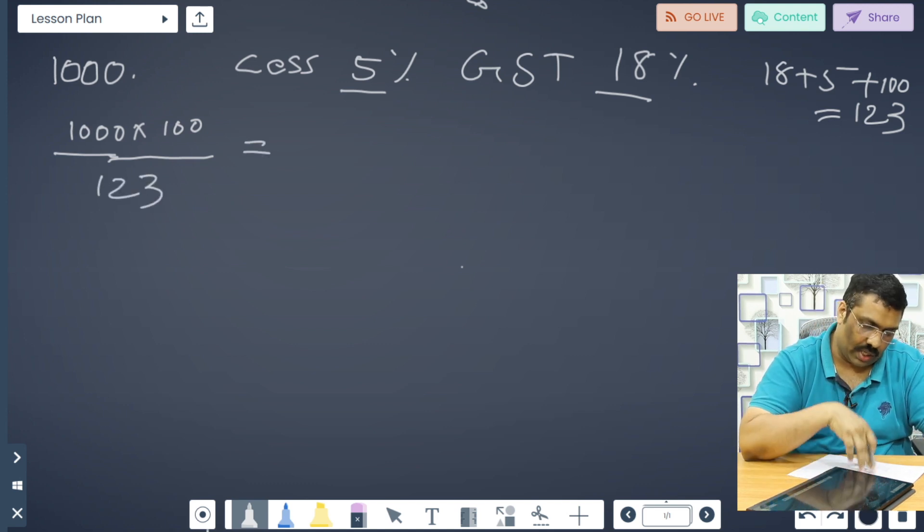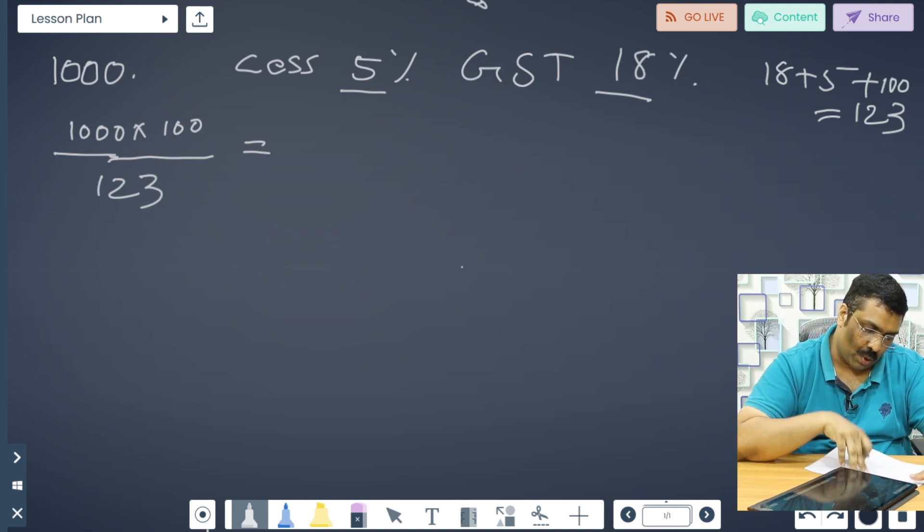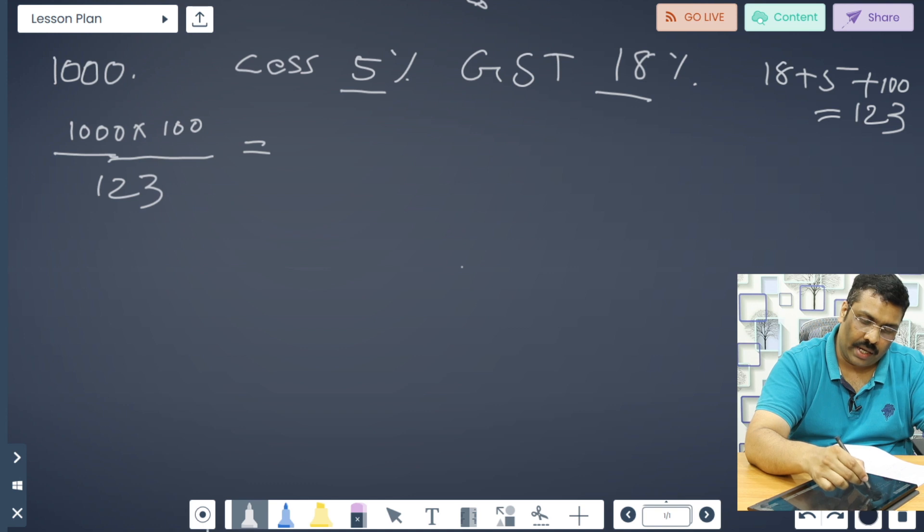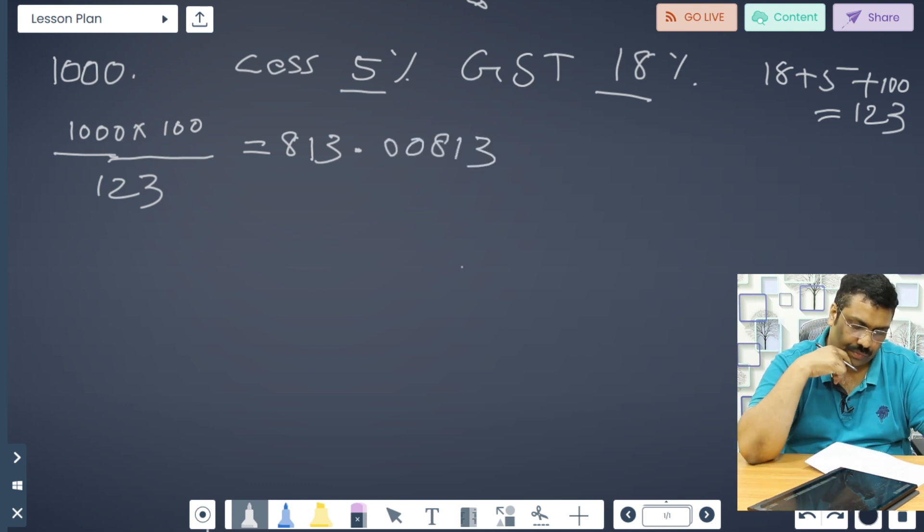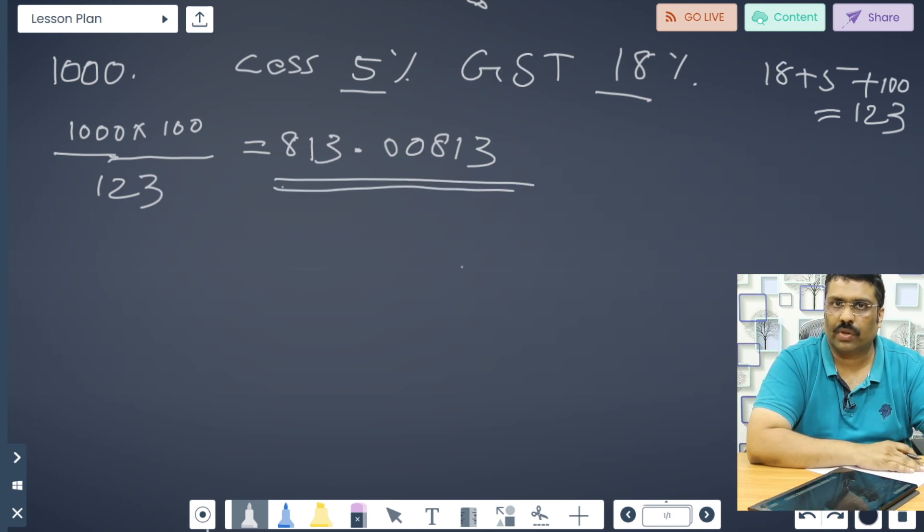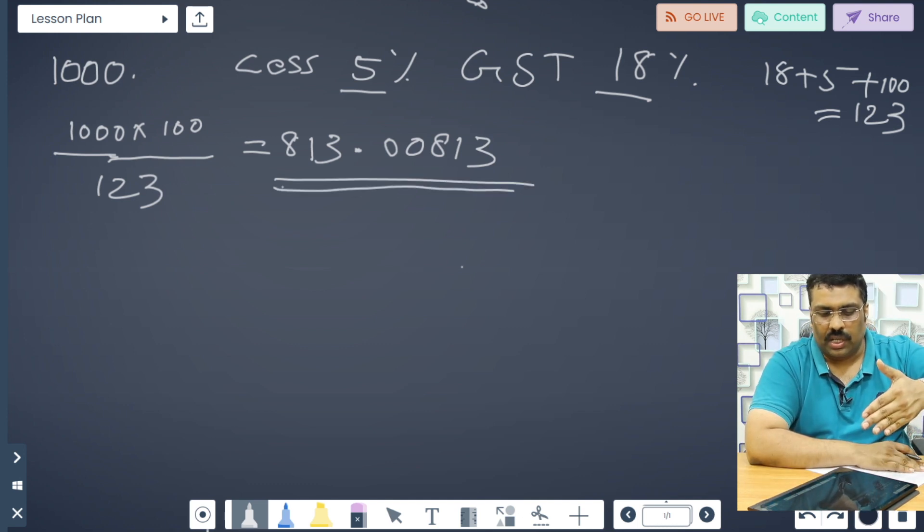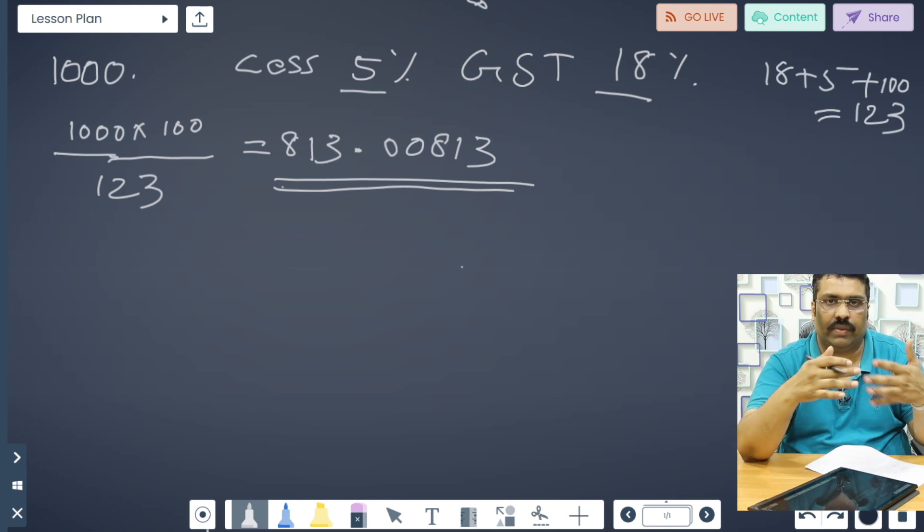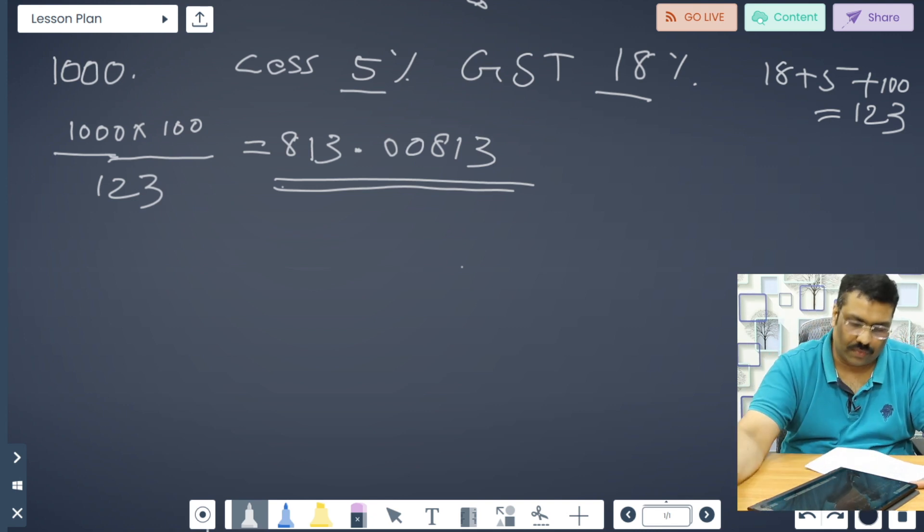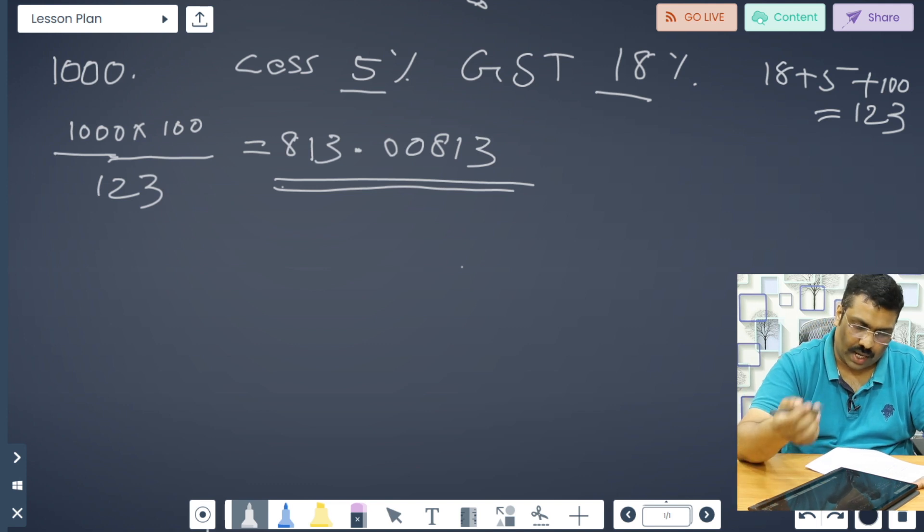This amount will be 813.00813. This will be the taxable value. Let's see whether it is correct or not. How will we find out? How will we examine whether it is correct or not, this taxable value? Very simple. We will make the reverse calculation.